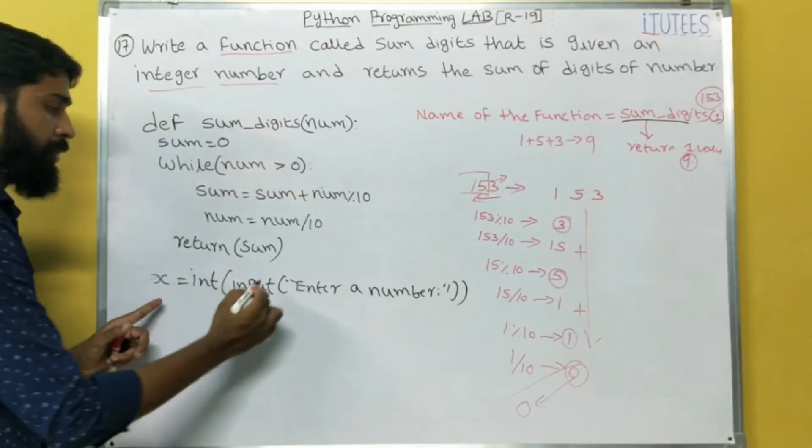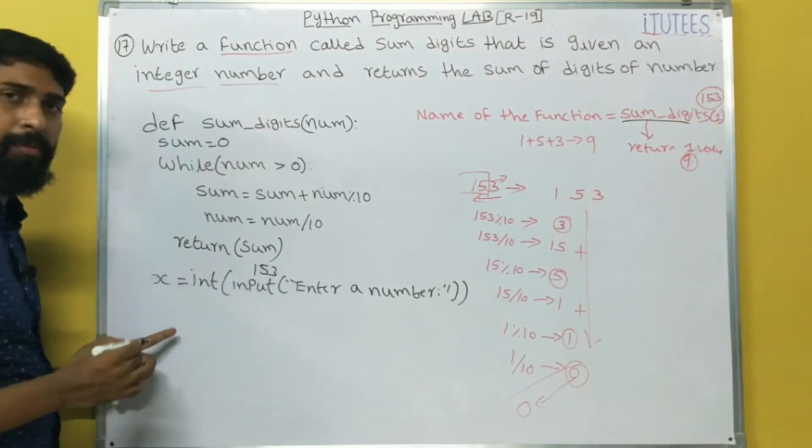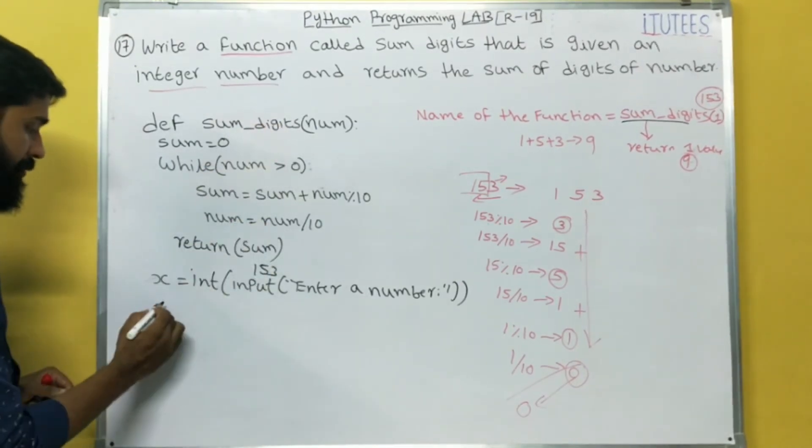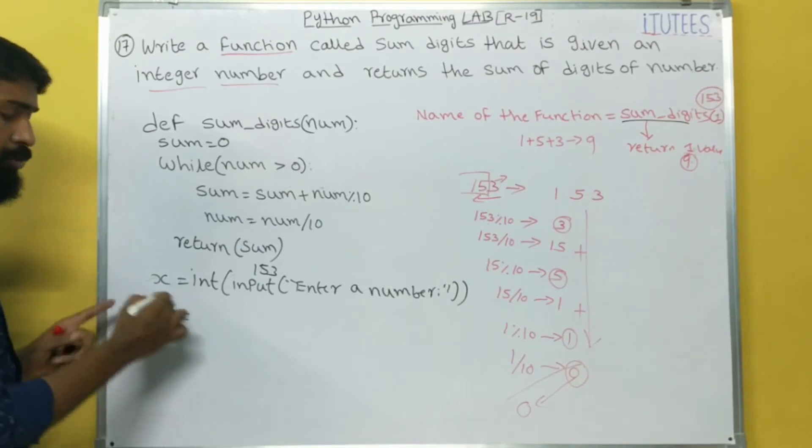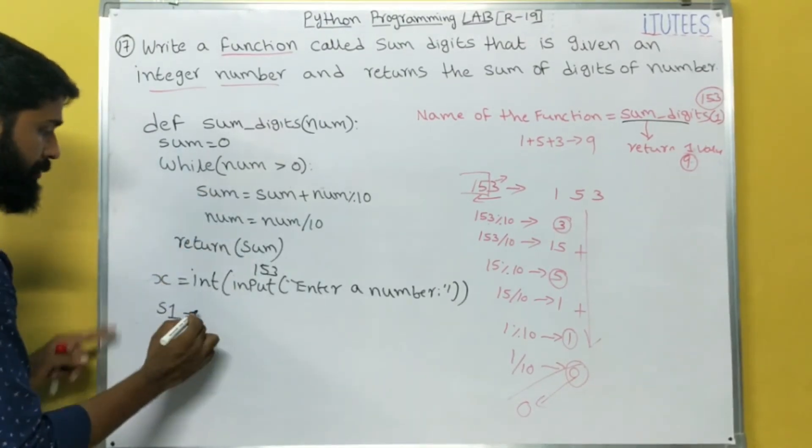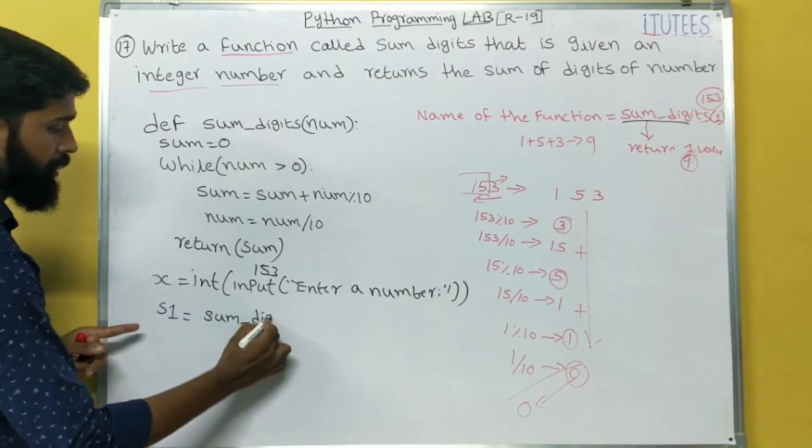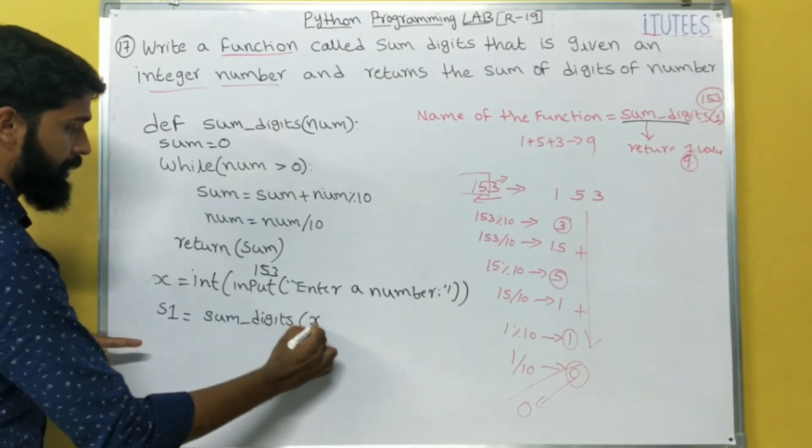Now, whatever you are entering from keyboard that is stored in x. Now, you call this function. That's it. It returns some value. So, s1 to store the sum. Equals to, what is the function name? sum_digits of x. That's it.